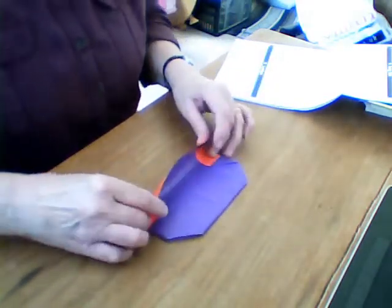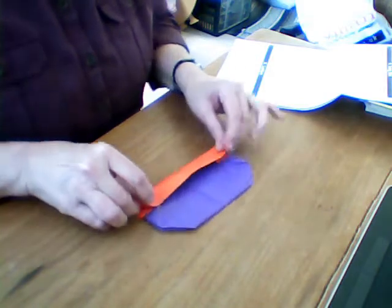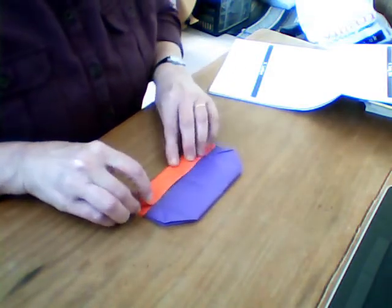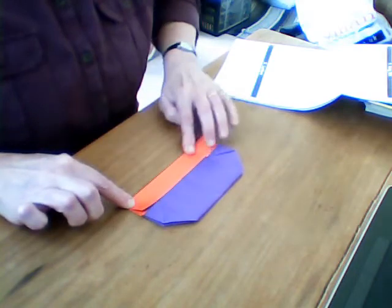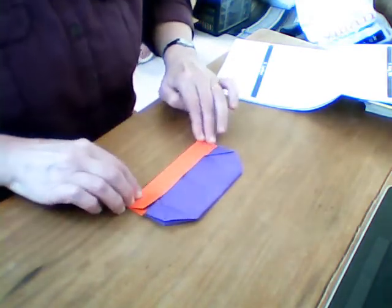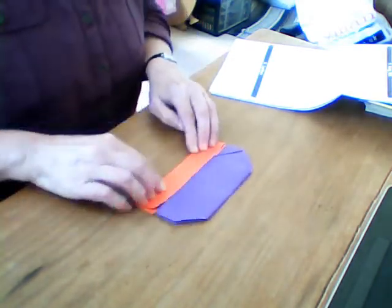And then you turn it over again and do the same on the other side. Just to meet the line where those roofs are, so that when you open it out into the box.